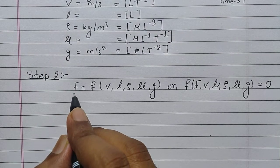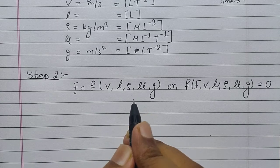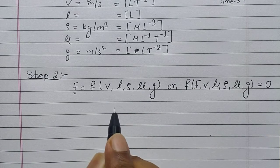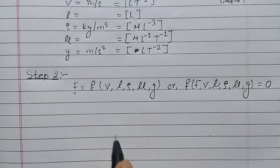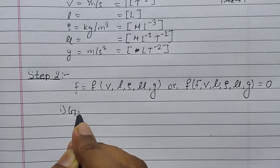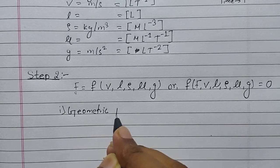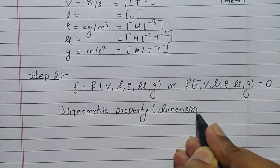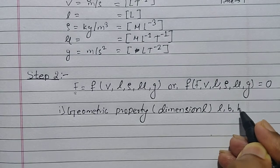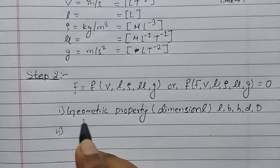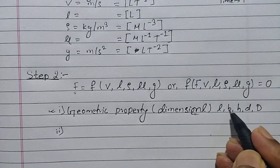From the independent variables we need to select repeating variables. Buckingham has given us rules for selecting repeating variables. In each and every question we select three repeating variables. The first is based on geometric property — mainly a dimension like length, breadth, height, depth, or diameter.